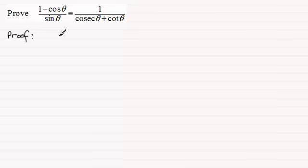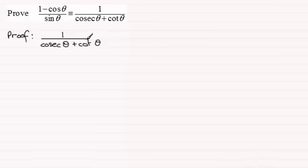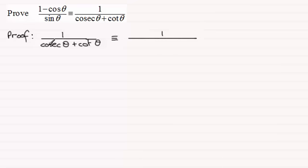So let's start with the right hand side, which is quite unusual in most identities. We've got 1 divided by cosec theta plus cot theta. We want to head towards sines and cosines, so let's change these two functions in the denominator. Cosec theta is the same as 1 divided by sine theta, and cot theta is the same as cosine theta divided by sine theta.